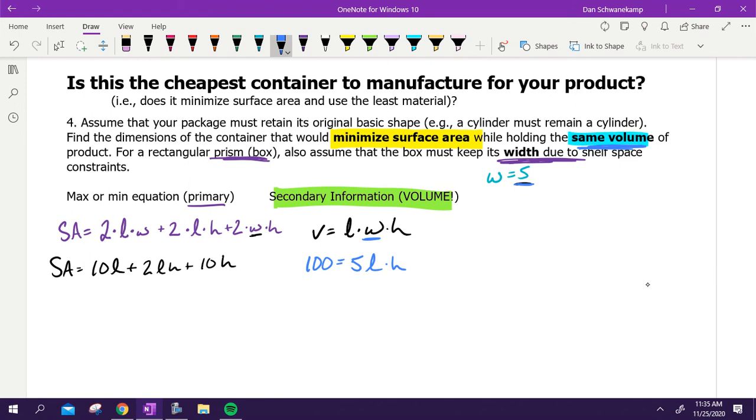Now what can I do with this new equation? Solve for a variable. Which variable? We want to solve for H. Divide by 5L, divide by 5L. So for me it's a very simple 20 over L equals H.